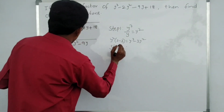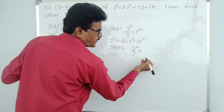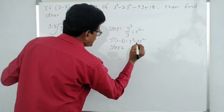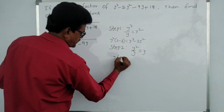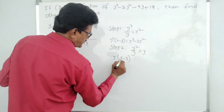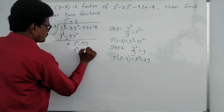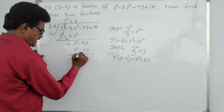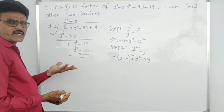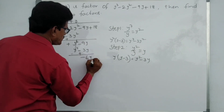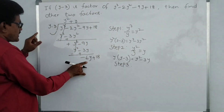Step two: once again first term by first term. y² divided by y — y into y divided by y, one y cancels — we get y. Write y here. Now y into (y minus 3): y into y is y², minus 3 into y is 3y. Write y² minus 3y. Do subtraction, change the symbol — minus 9y plus 3y, minus is more, so we get minus 6y. Bring down plus 18.